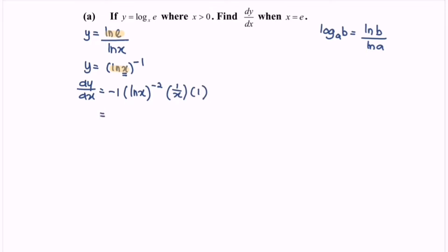Rewriting this, dy/dx equals negative 1 over x multiplied by (ln x) to the power of 2.